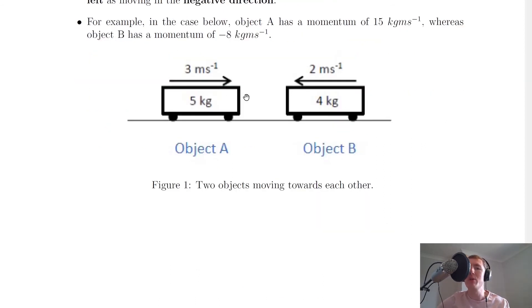So for example, in the case below, object A has a momentum of 15 kilogram meters per second, because we take our mass multiplied by the velocity, so we get 5 times 3 is 15 kilogram meters per second, and it's positive because the object is moving to the right.